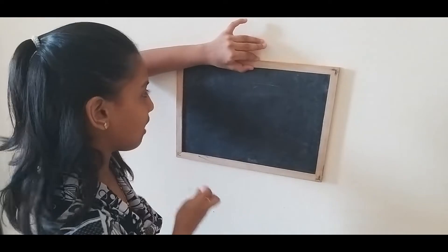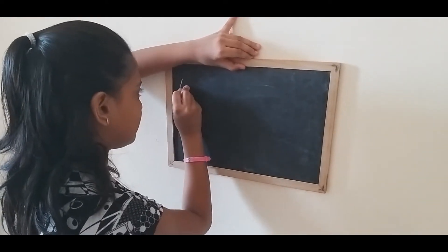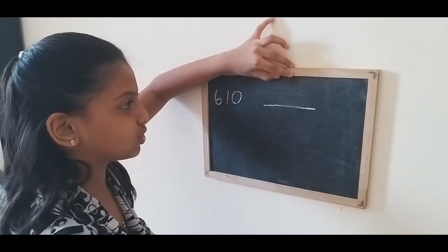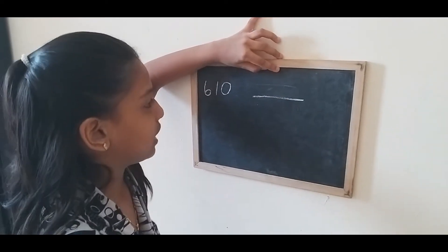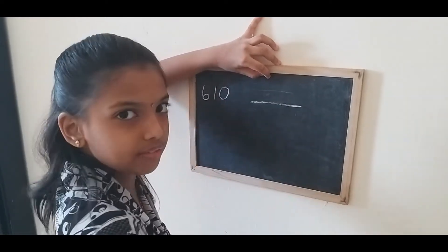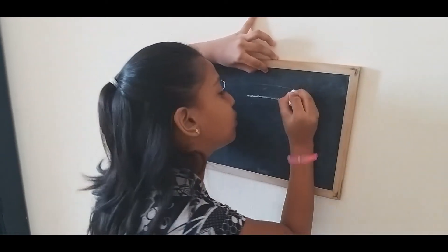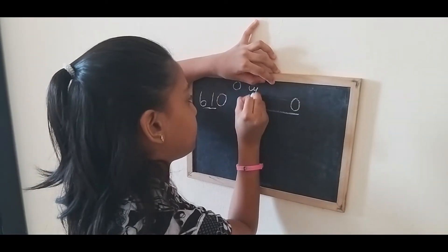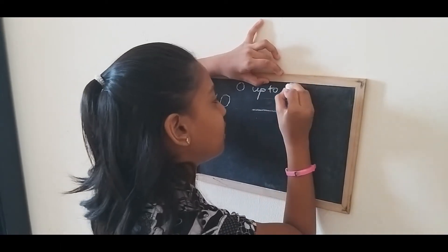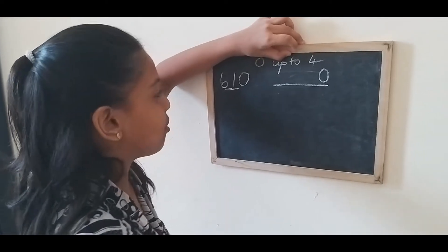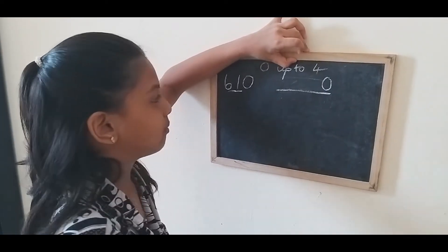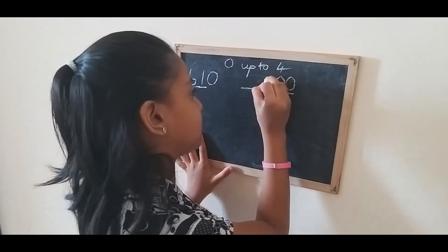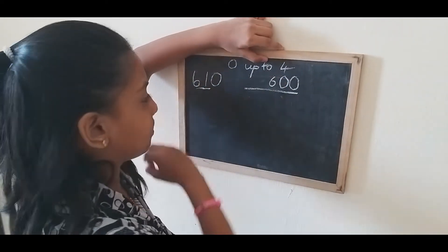First example is six hundred and ten. We have to round off to the nearest hundreds. We do not check the ones place — we put zero there. Now we check the tens place. The tens place is 1, which is zero up to four, so we put zero and keep the other number the same. So the answer is six hundred.